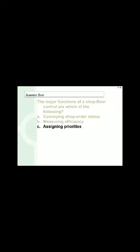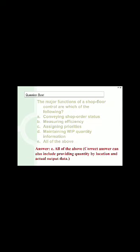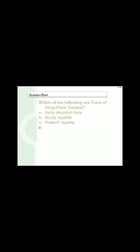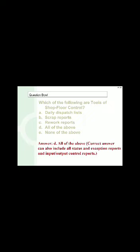The major functions of shop floor control include conveying shop order status, measuring efficiency, assigning priorities, and maintaining work-in-progress quantity information — all of the above, since these improve efficiency and provide proper control over the shop floor. Tools of shop floor control include daily dispatch lists, scrap reports, and rework reports — all of the above must be used to control the shop floor. A key principle of work center scheduling is that there is a direct equivalence between workflow and cash flow.